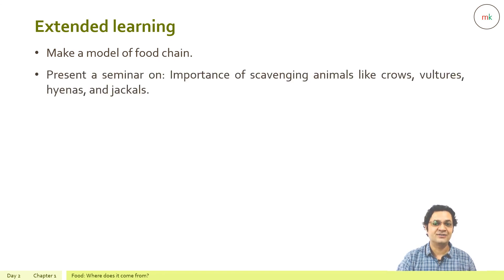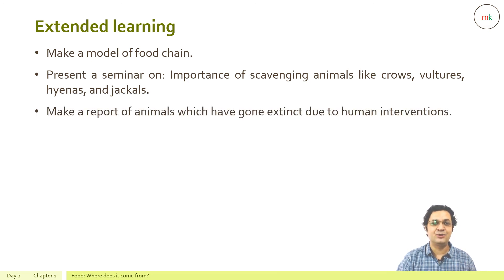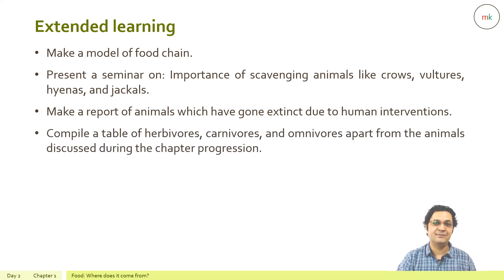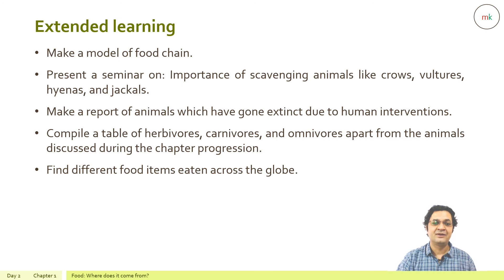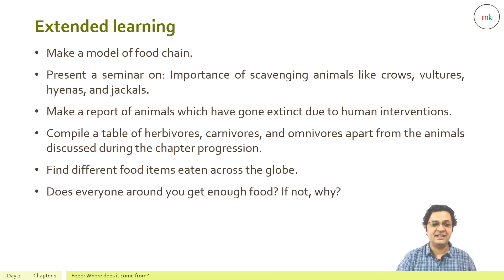For extended learning, you may make a model of a food chain, present a seminar on the importance of scavenging animals like crows, vultures, hyenas, and jackals, make a report on animals that have gone extinct due to human interventions, compile a table of herbivores, carnivores, and omnivores, find different food items eaten across the globe, and consider whether everyone around you gets enough food and why.